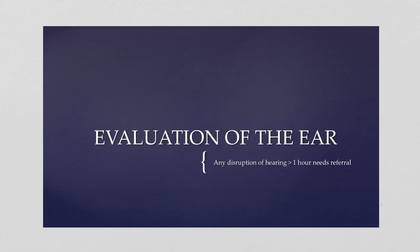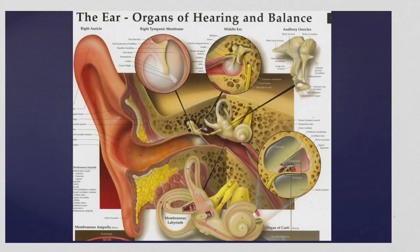Now we're going to start talking about the evaluation of the ear. A key thing to note: any disruption in hearing greater than an hour warrants referral. Ear injuries are typically only seen in designated sports — boxing, ice hockey, and wrestling is probably the sport where ear injuries happen most. If we do see ear pathologies, they often relate to disease or illness. Our first step is going to be the anatomy of the ear, which I'd like to break into three different components: the outer ear, the middle ear, and the inner ear.